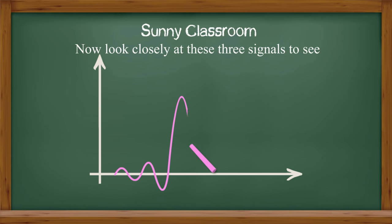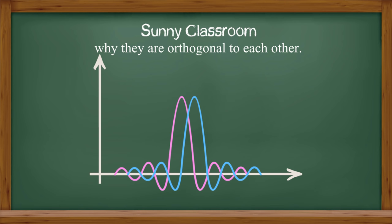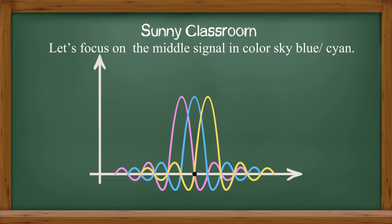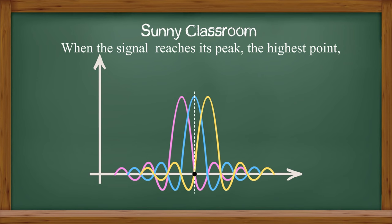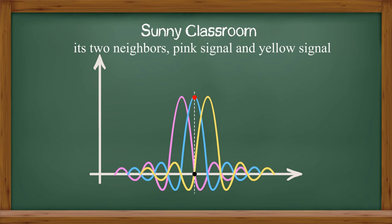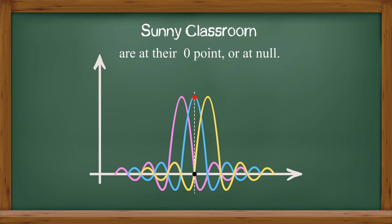Now look closely at these three signals to see why they are orthogonal to each other. Let's focus on the middle signal in color sky blue or cyan. When the signal reaches its peak, the highest point, its two neighbors, pink signal and yellow signal, are at their zero point or at the null.